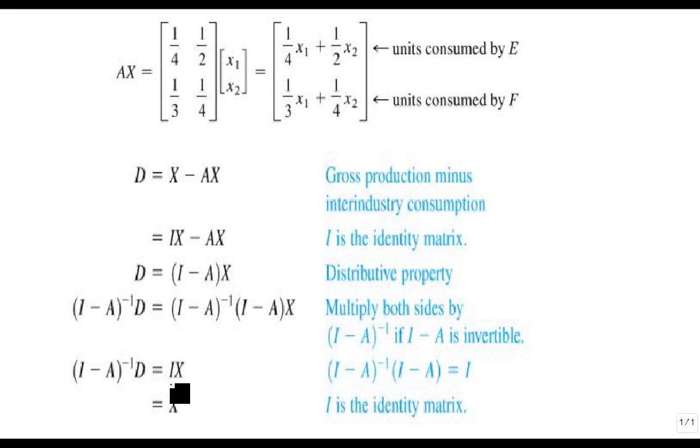So, let's suppose that based on this conversation, that the consumer demand for energy, D1, is 1,000 units. And for food, D2 is 3,000 units. So we need 1,000 units of energy for our consumers, and 3,000 units of food for our consumers. We need the level of production x, so we'll meet this.